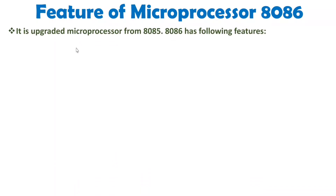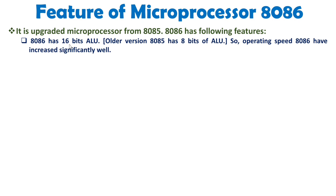When we talk about 8086 features, first of all you should know that 8086 has a 16-bit ALU. The older 8085 had an 8-bit ALU. So the operating speed of 8086 will increase. For example, if you want to do 16-bit addition in 8085, you would have to execute many instructions to perform a 16-bit operation. But with 8086, we can directly perform 16-bit operations using a single instruction, so obviously the operating speed will increase.